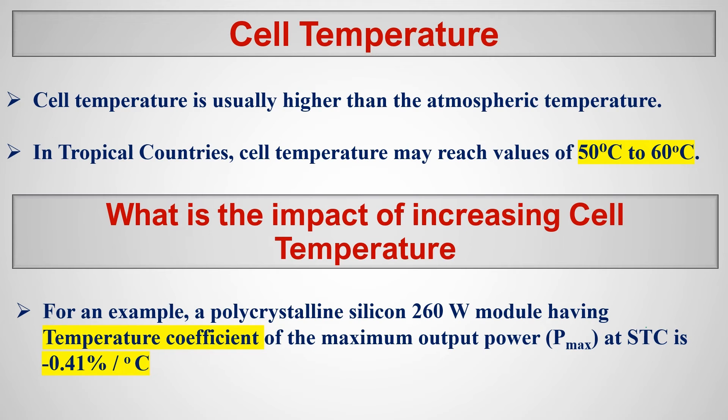What does this mean? It means from 25 degrees Celsius, each one degree Celsius increase will reduce the efficiency by 0.41%. So you can calculate that like if 10 degrees Celsius increased, if the cell temperature is 35 degrees Celsius, then you will lose 4.1%. 0.41 into 10, it becomes 4.1% efficiency will be lost.